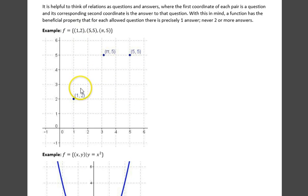The answer for one here is two, five is five, and pi is five.